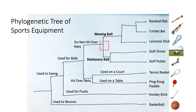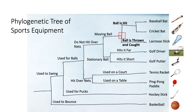Golf drivers and putters are used for stationary balls, while the other OTUs involve reacting to a moving ball. Golf drivers and putters split because drivers are used to hit the ball far, whereas putters are used to hit the ball short. The lacrosse stick diverges because it is used to throw and catch the ball, while the other OTUs are used to hit the ball.